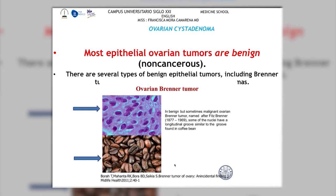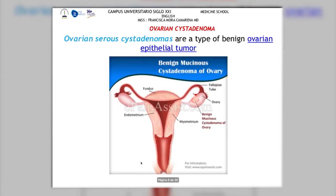As we can see, this part resembles a coffee bean shape, which is why it's called that. Today we're focusing on the ovarian cystadenoma, which is a benign type of ovarian epithelial tumor. Remember, most of them come from the epithelial lining. The benign mucinous cystadenoma of the ovary is one of the most common, and here we can see the comparison between the regular ovary and the cystadenoma.